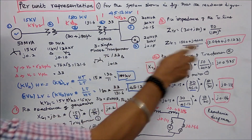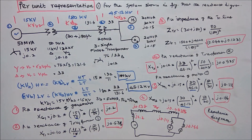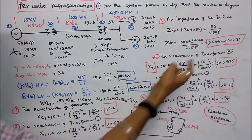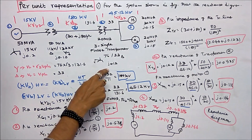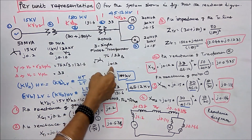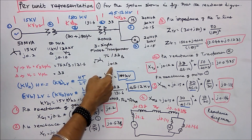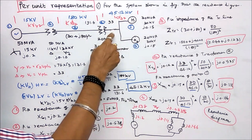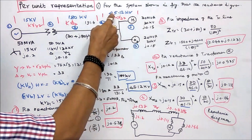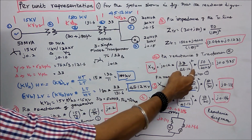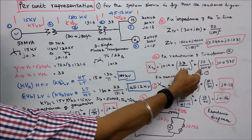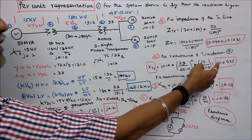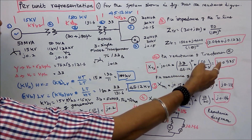Fourth is per unit reactance of the three-phase transformer bank. Three transformers, 3 times 20 equals 60 MVA total. Actual leakage reactance of the whole setup is J0.12. Per unit equals J0.12 into (33/45.12) squared times 50/60, where 60 is 20 times 3. That equals J0.0535.